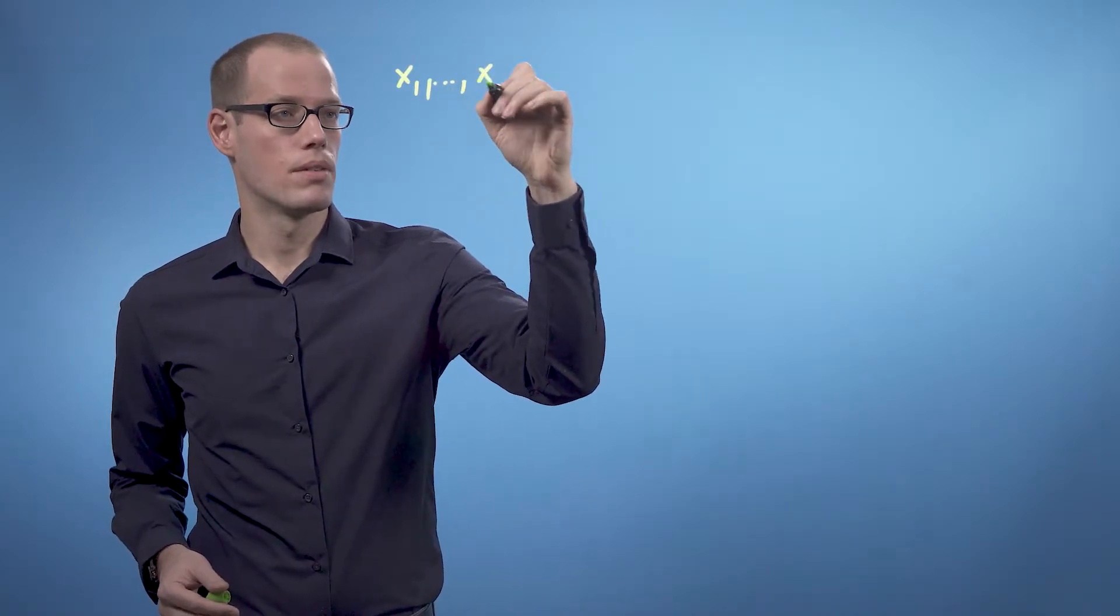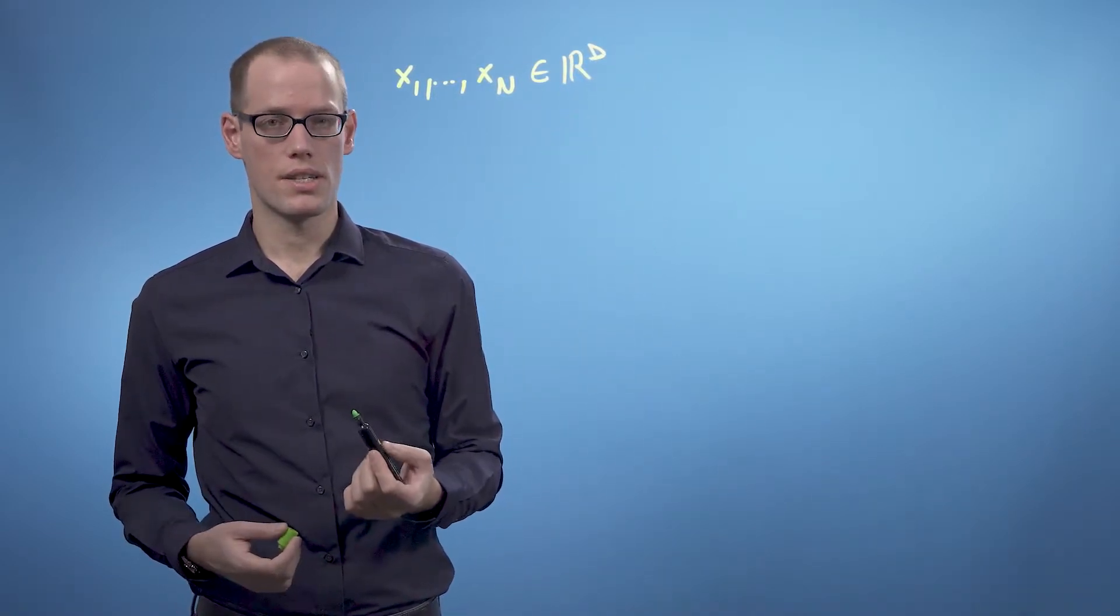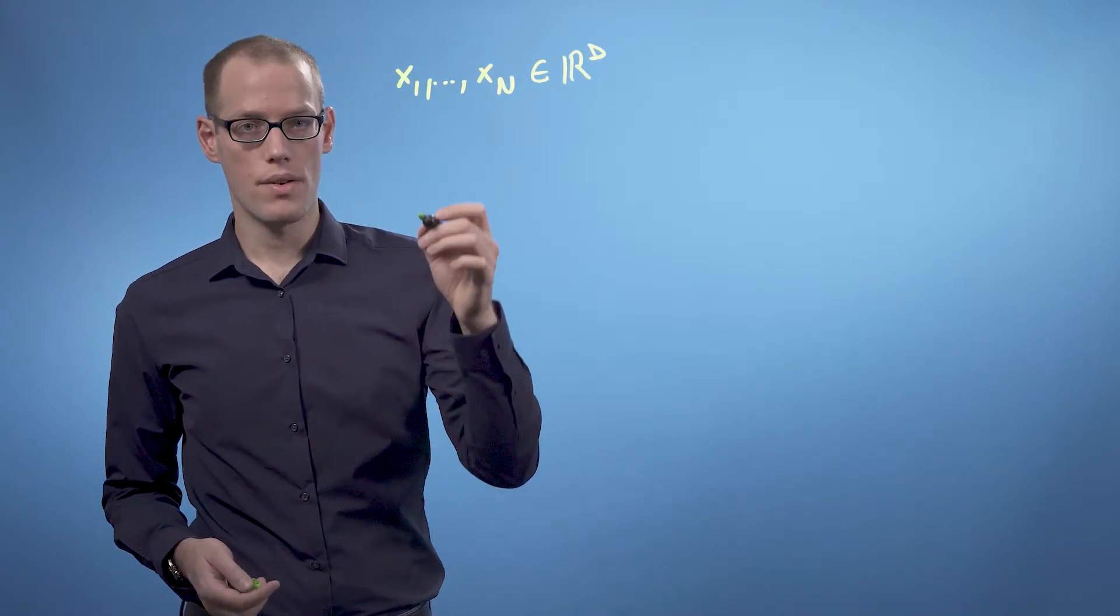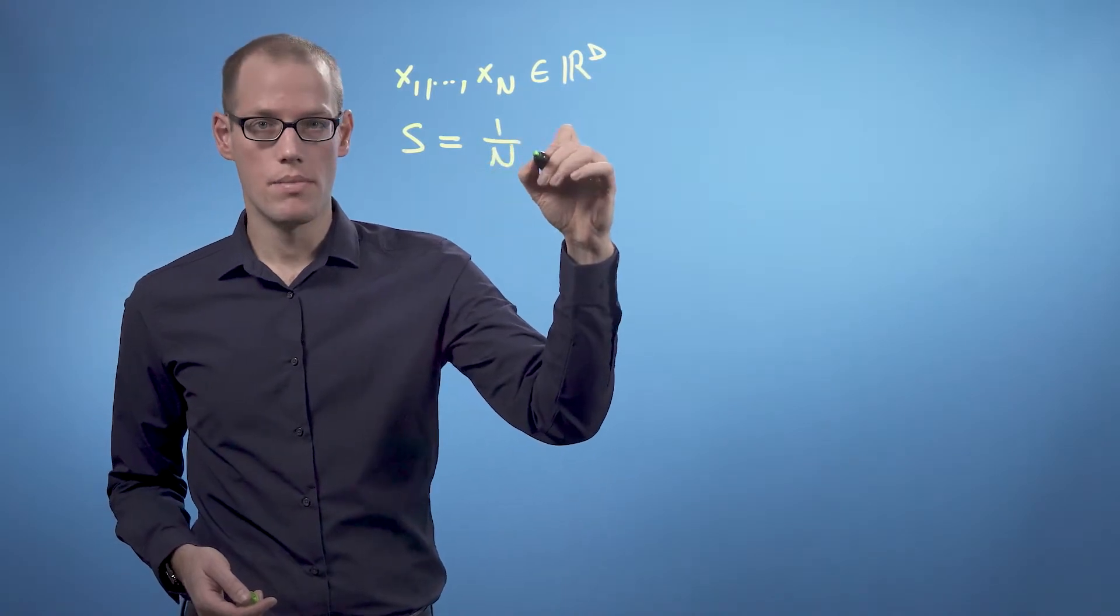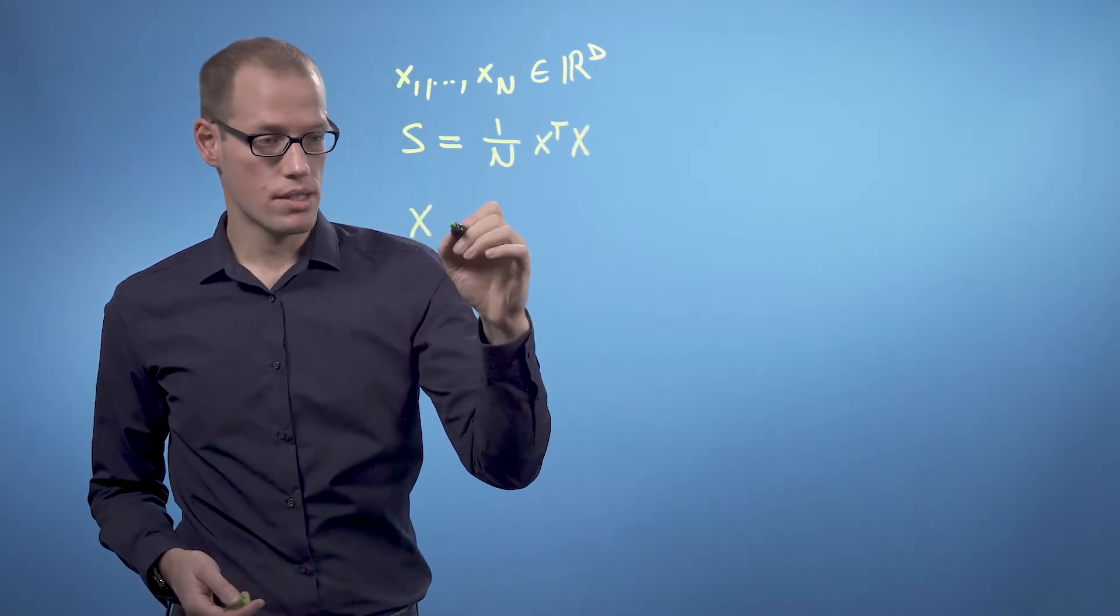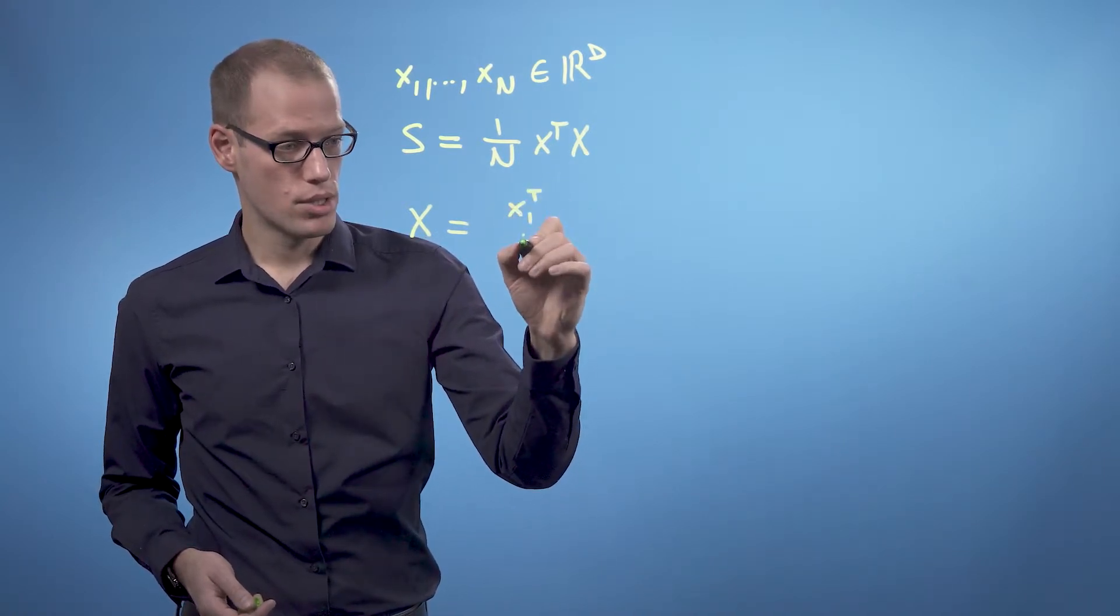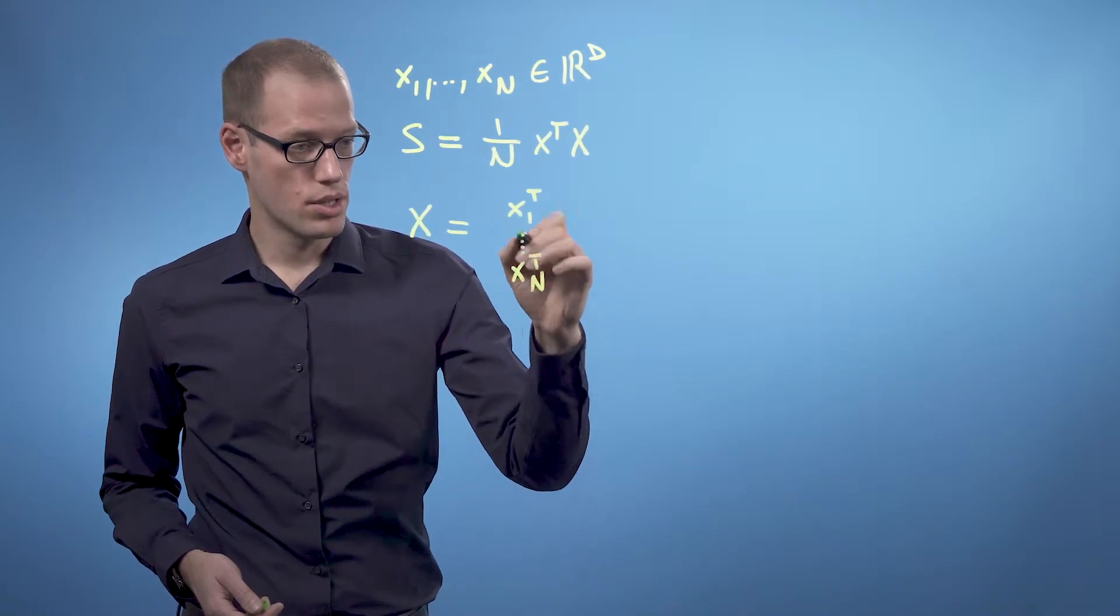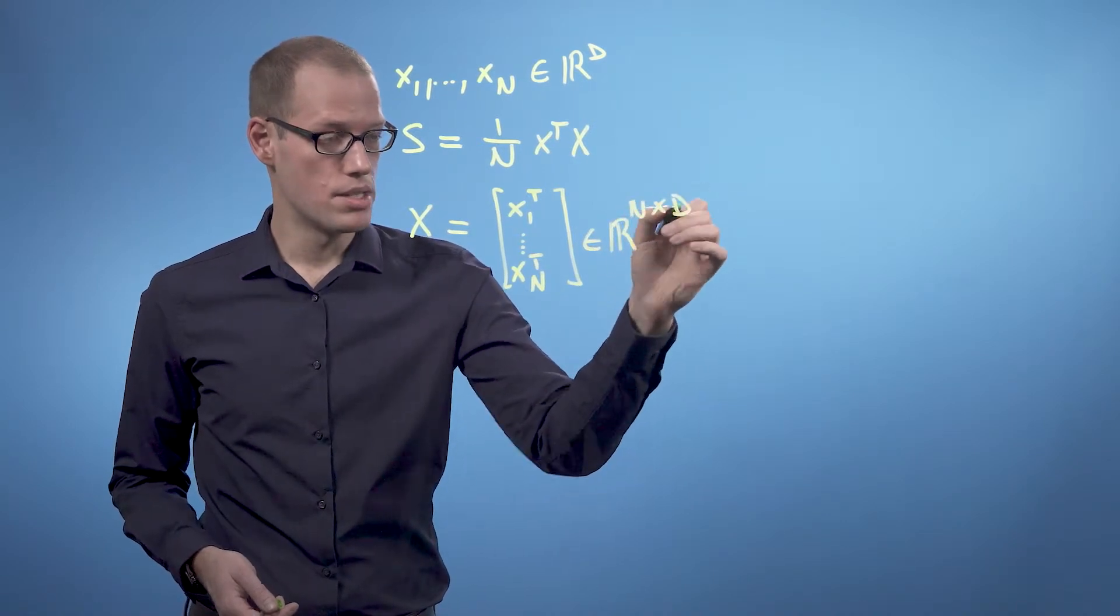Assume we have a data set given as x1 up to xn in ℝ^d, and we assume that the data is centered, so it has mean 0, then the data covariance matrix is given as S = 1/N X^T X, where we define X to be the matrix that consists of x1 transpose up to xn transpose, and that is an n by d matrix.